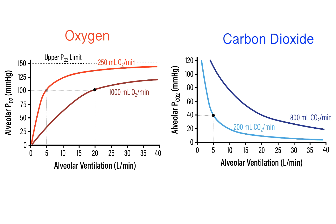There are interesting cases, however, where this is not true — where there's a mismatch between the blood gas demands of both O2 and CO2 that cannot be corrected simultaneously by simply increasing or decreasing alveolar ventilation. In future videos, I'll look at a few of these examples and discuss how the body can make other compensatory changes to address that type of mismatch between alveolar ventilation and the homeostatic levels of carbon dioxide and oxygen.